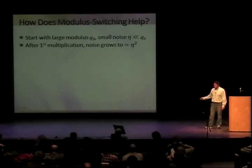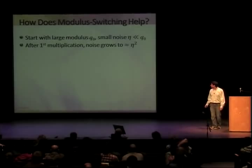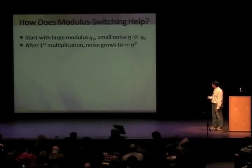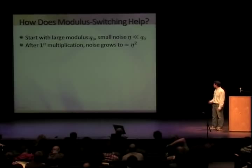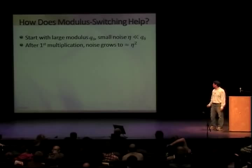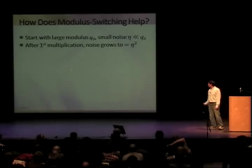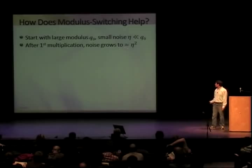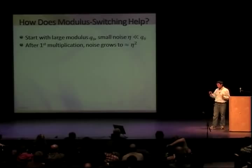Here's a concrete example. The original modulus Q is 107, the smaller one P is 29, both odd. The ciphertext is a specific vector and the secret key is a short vector. The inner product mod Q: subtract 8 times 107 and get -30.